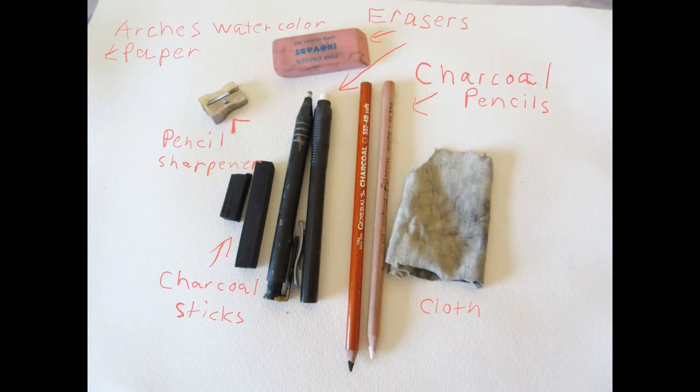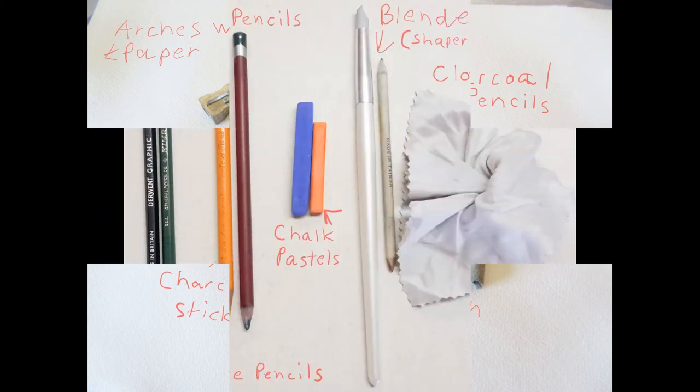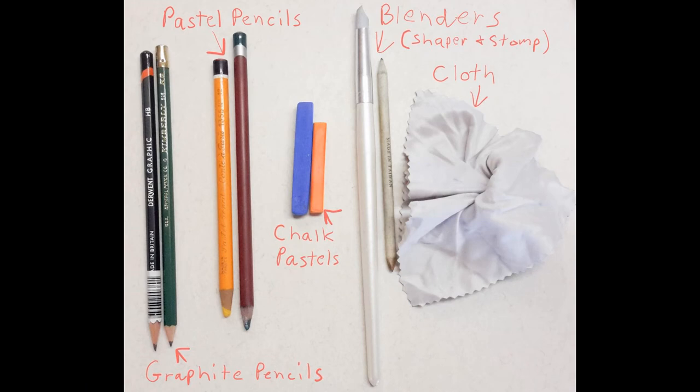Here are the traditional kinds of tools for charcoal — you can get them in pencils and sticks, and also use a cloth to smudge, plus pencil sharpeners and erasers. For pastels, you can get those in pencils or stick form and use blenders or cloth. Of course there are also graphite art pencils with different grades, hard and soft.